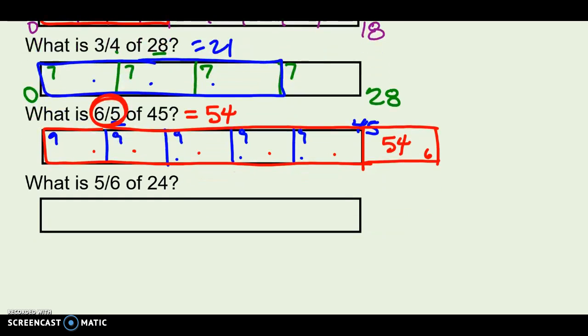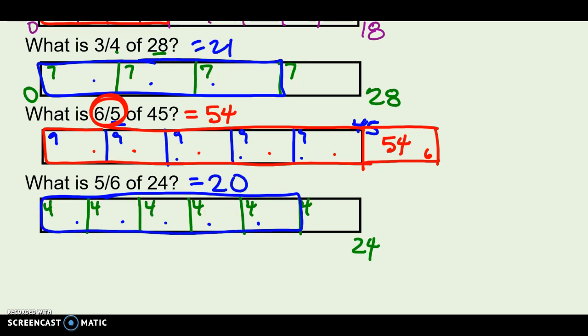Last one. Try this one totally on your own and see what you get for an answer. Pause. I split 24, I divided it into 6 pieces. That gave me 4 for each section. Then I needed 5 of those, 5 sixths, and I got 20.